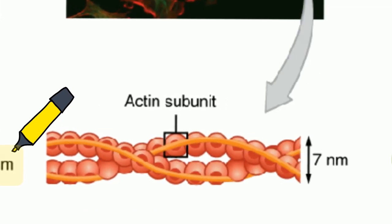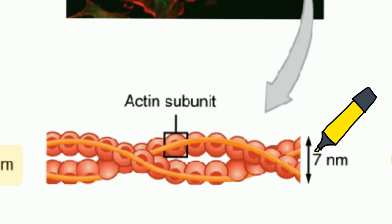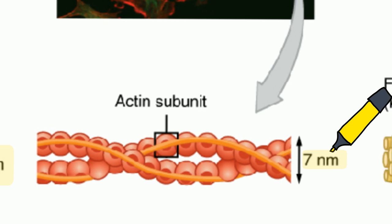In contrast, microfilaments are the smallest component at about 7 nm and they are made up of actin arranged in a spiral chain.